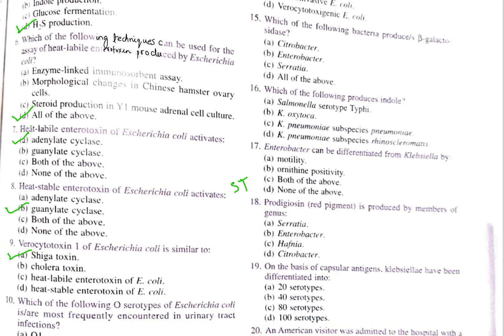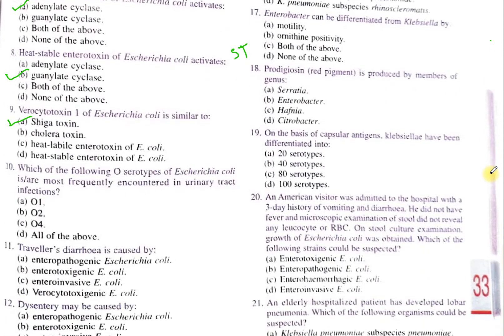Question number 10: which of the following O serotypes of Escherichia coli are most frequently encountered in urinary tract infection? Option A. O1, B. O2, C. O4, D. All of the above. The correct option is D, because all of these serotypes can cause UTI infections.